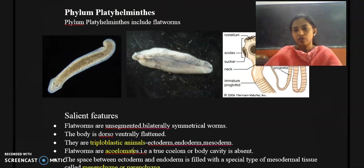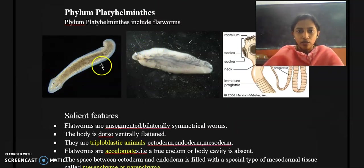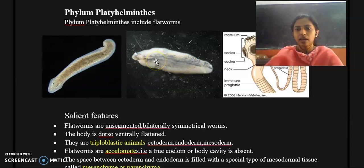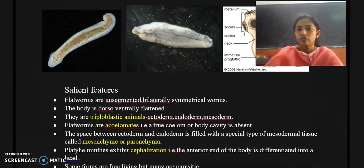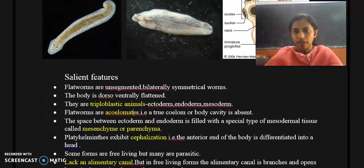Moving on to the salient features: flatworms are unsegmented organisms, but there are exceptions. When we check the body structure of Planaria and Liver Fluke, segments are absent — hence they are called unsegmented animals. However, when we check the structure of tapeworm or Taenia solium, we can see segments, and each of these segments is called a proglottid. Most members of phylum Platyhelminthes are unsegmented, but there are exceptions.